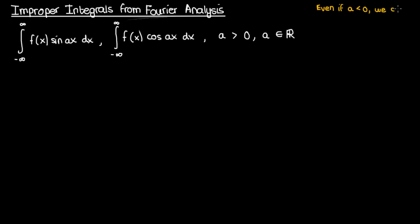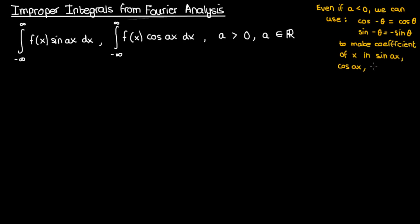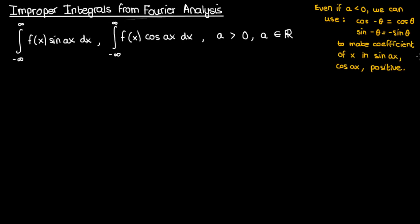Now if a were negative you could still take out the negative sign from the sine and cosine expressions such that the number multiplying x in the sine and cosine terms would always be positive, thanks to these convenient identities. So although the integration technique and its justification rely on a positive a, you can always manage a negative a by taking out the negative sign using either of these identities.